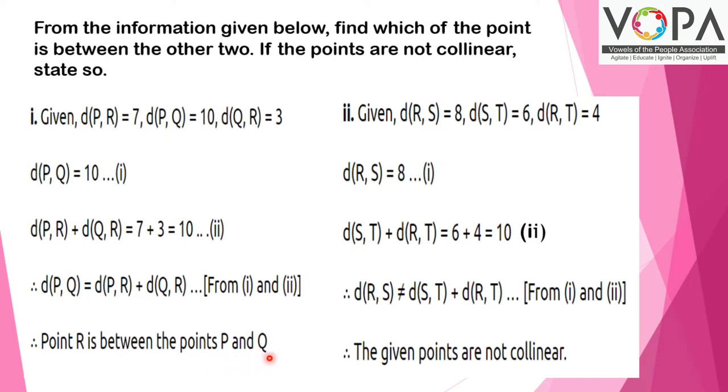And we say that the points are collinear with R in between P and Q. Second question is given: the distance of RS = 8, distance of ST = 6, and distance of RT = 4. Here we can see the maximum value is 8, so keep it aside. Distance of RS = 8, we take it as equation 1. Then the remaining two: distance of ST plus distance of RT equals 6 plus 4, which is equal to 10. That is the second equation. But distance of RS is not equal to distance of ST plus distance of RT. Hence, from 1 and 2, we can understand the points are not collinear.